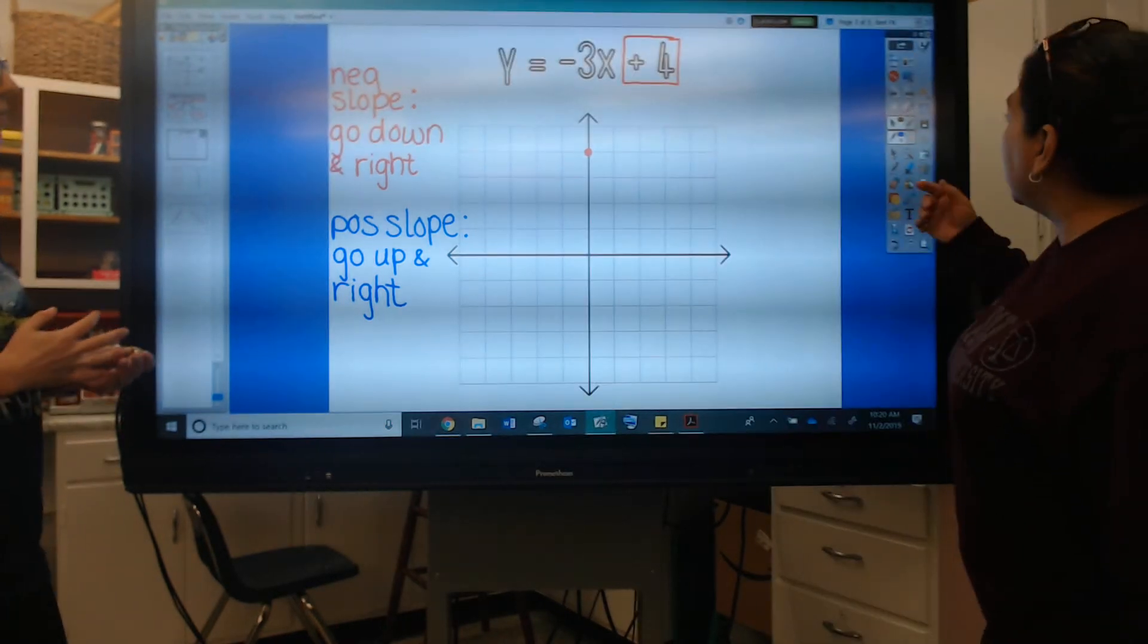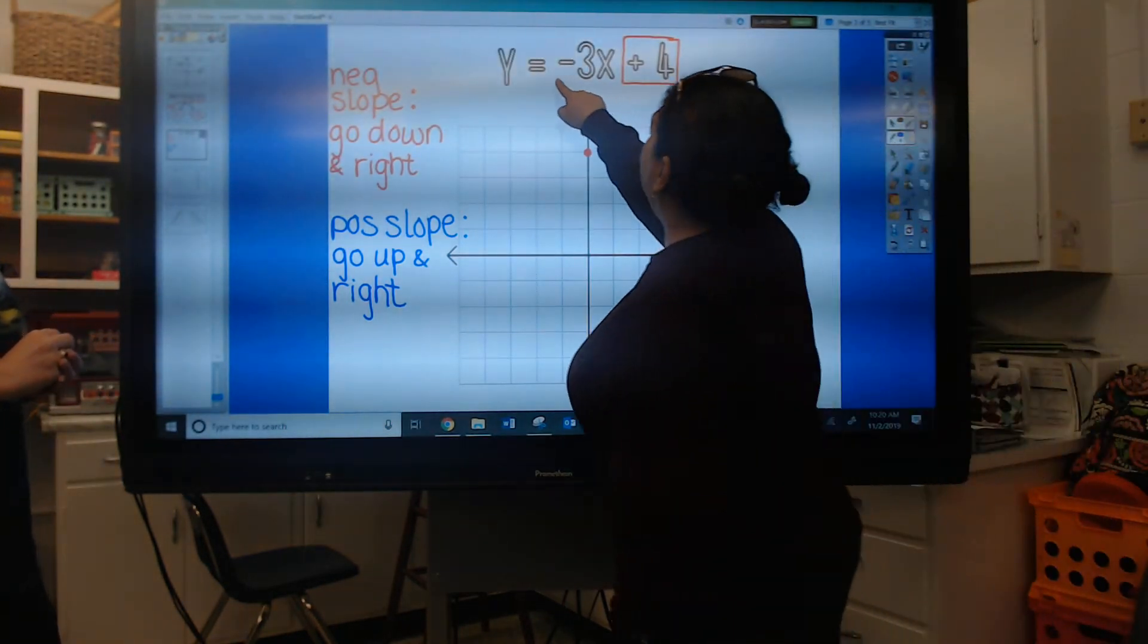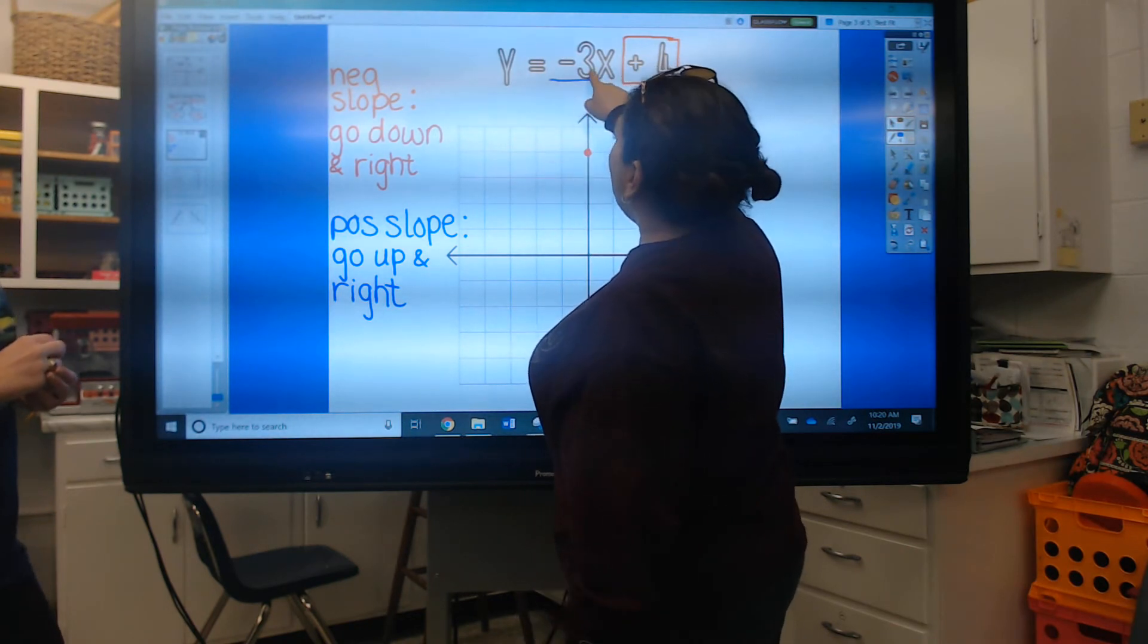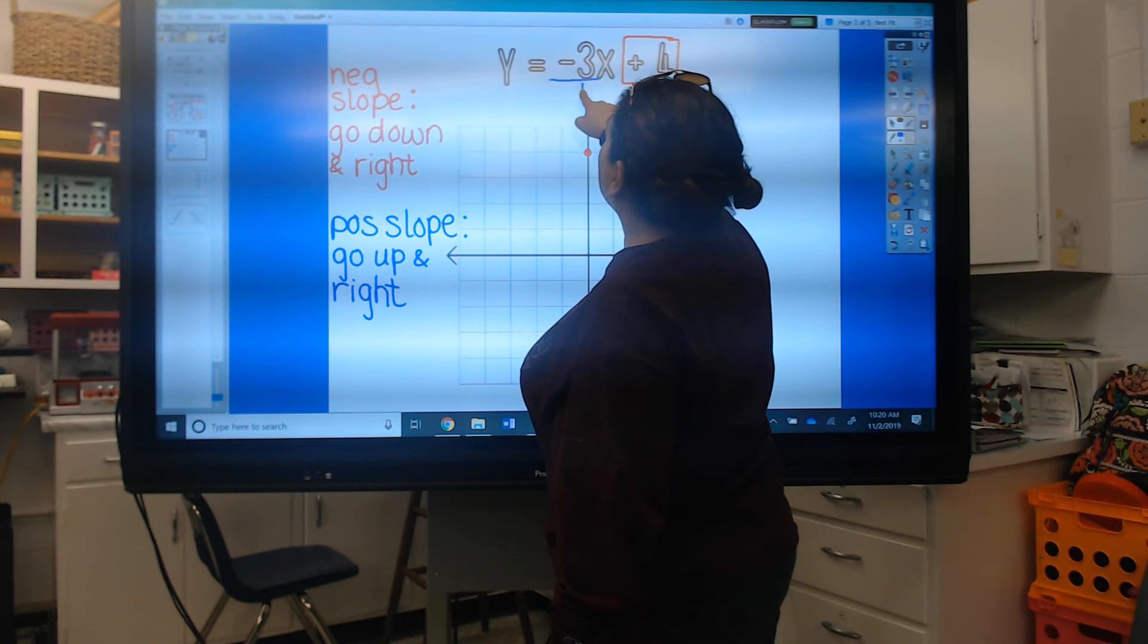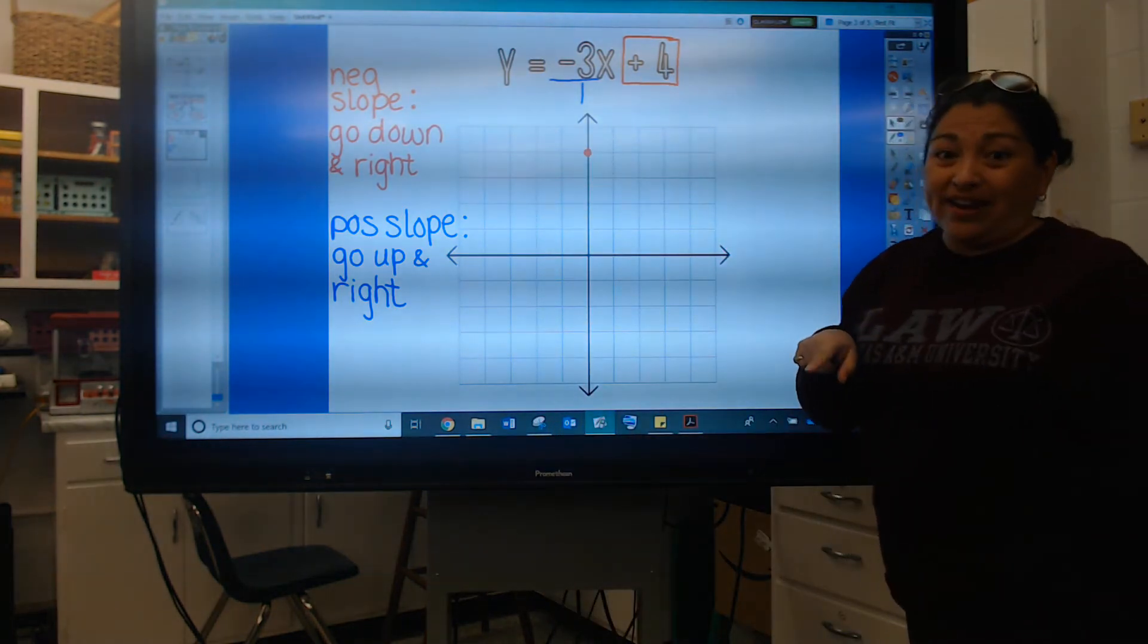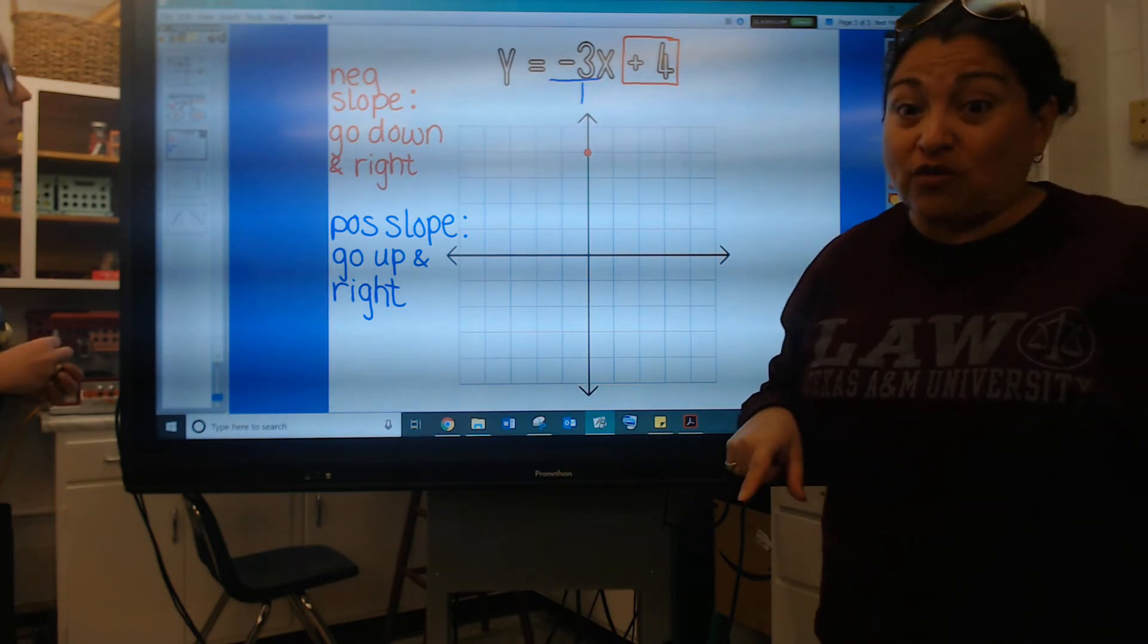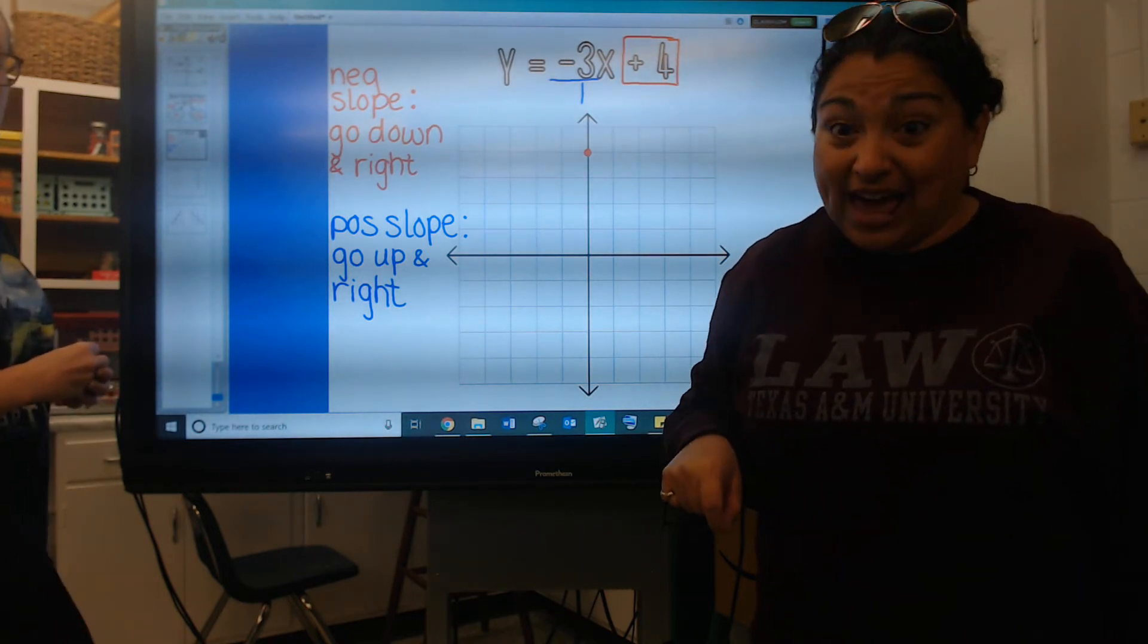Okay so at this point we have a negative three slope but if you have a number here and there's not a fraction a one goes underneath it because negative three and negative three over one are the same exact thing.